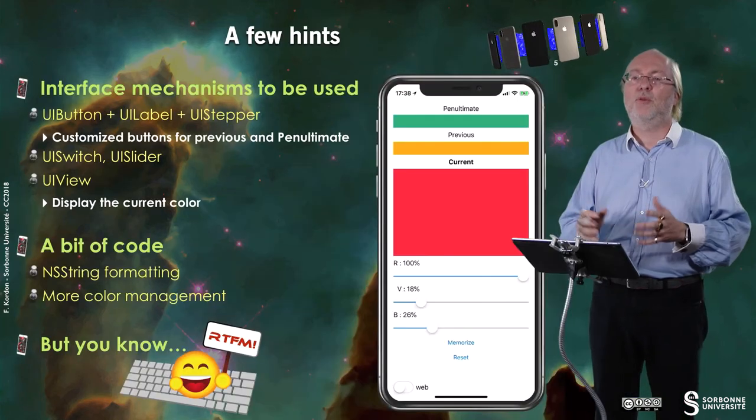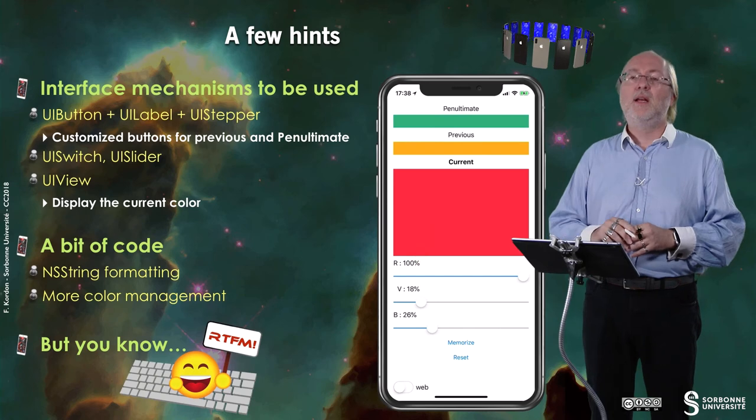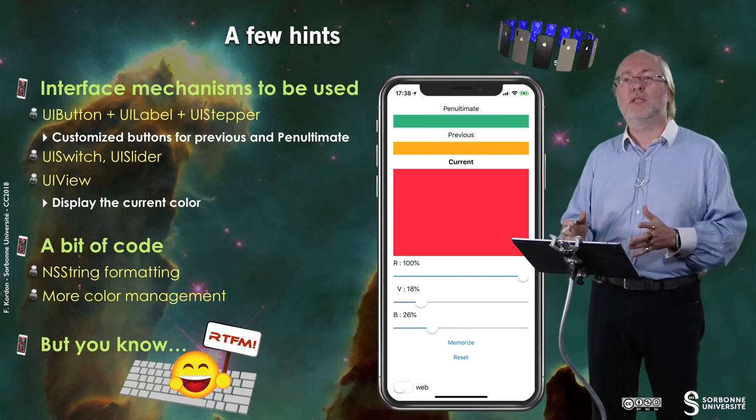And you will have to write a bit of code. You have a bit of any string formatting. Not that much, in fact. Basically around there. And you have some color management. You will have to use a way to elaborate color where you can set up the value for red, green and blue.